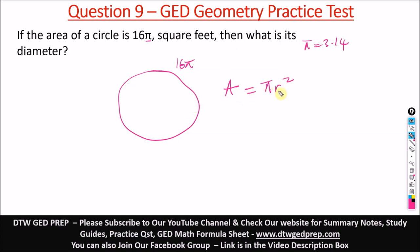The area is π r squared, so we have to look for the radius first. With the value of the radius we can now get the diameter. So here A is 16π.